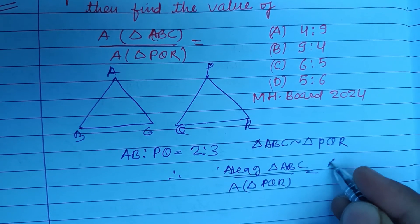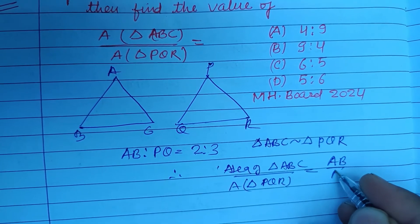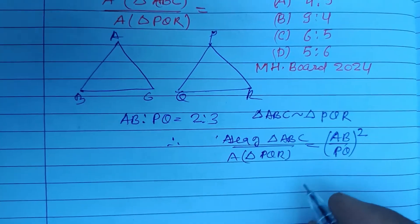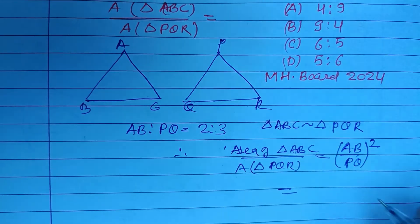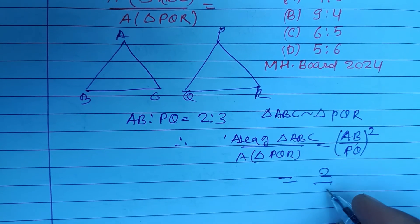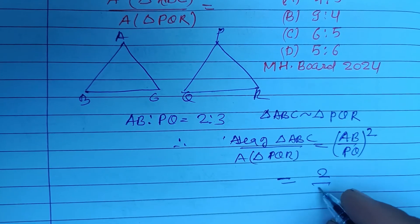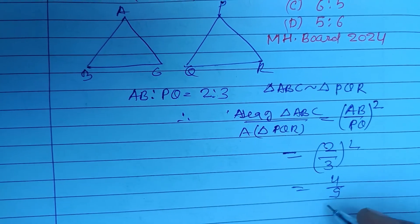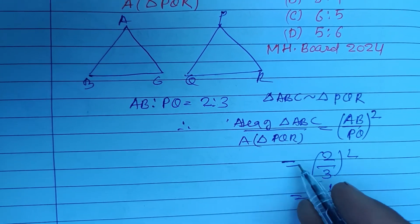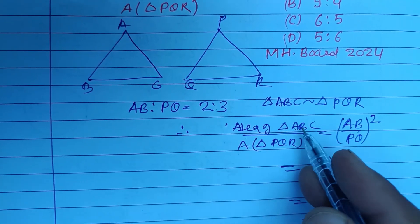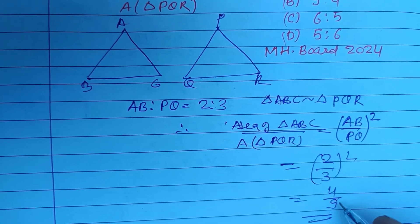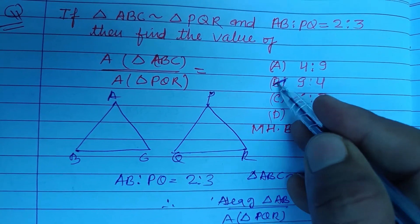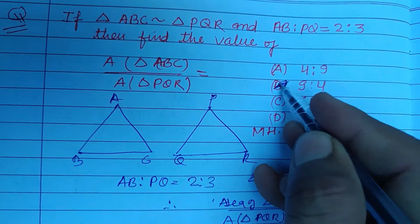The area ratio equals the square of the ratio of their respective sides — AB upon PQ. AB upon PQ is given as 2 by 3, so whole square of 2 by 3 is 4 upon 9. Therefore, area of triangle ABC upon area of triangle PQR is 4 upon 9, which is found in option B.